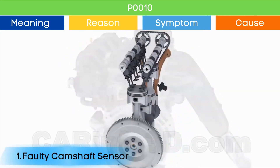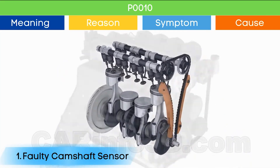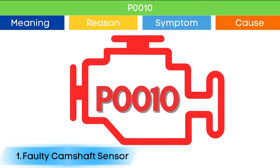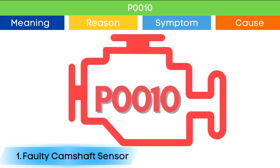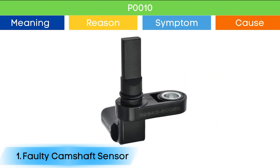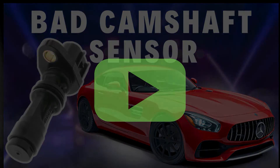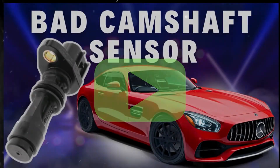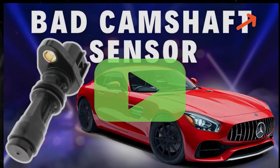Cause number one: bad camshaft position sensor. Due to the malfunction of the camshaft position sensor, the ECU may detect an engine timing error, which may trigger P0010 and other OBD2 codes related to camshaft position sensors, along with symptoms of a bad camshaft position sensor. Check our detailed video to learn more about the symptoms of a bad crankshaft position sensor and related OBD2 codes — link in the corner.